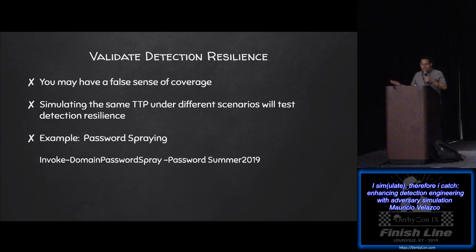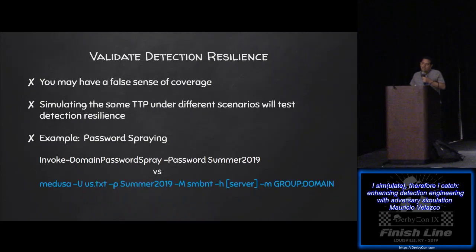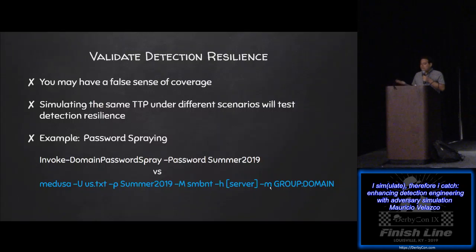We need to validate detection resilience. The same technique can be implemented in different ways by attackers, which may look different in logs, giving you a false sense of coverage. For example: if your purple team runs a password spray tool like DomainPasswordSpray from a Windows domain-joined host via PowerShell, it uses Kerberos and targets one password per user, generating 4771 event IDs. You may think you've got it covered. But what if the attacker uses a rogue device and NTLM targeting a server instead of the domain controller? That looks completely different in the logs and your first detection won't work. So we need to simulate different variations of the same technique.